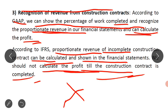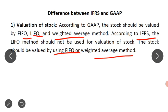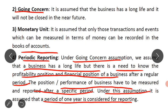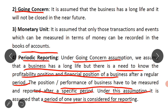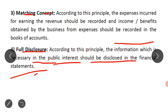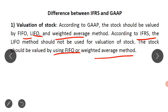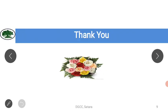This is the third differential point between GAAP and IFRS. That's it with today's lecture. We started with the concept of Generally Accepted Accounting Principles, then studied the basic assumptions and principles used while preparing financial statements, and finally saw the three differential points between IFRS and GAAP. Thank you very much.